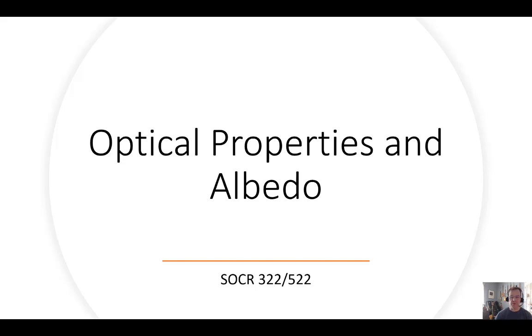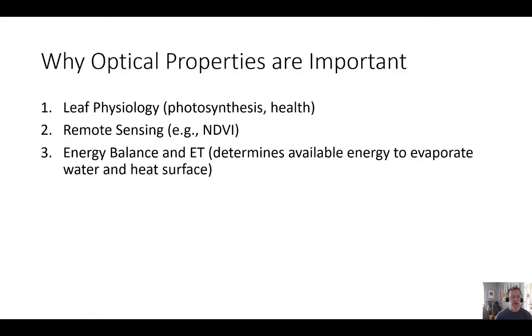The optical properties of a leaf, crop, field, or entire watershed are important for several reasons. One is it affects leaf physiology. We're all familiar with the difference between a nice healthy green-looking leaf and one that looks necrotic or has some type of nutrient deficiency. So optical properties are an indication of leaf health and its ability to photosynthesize.